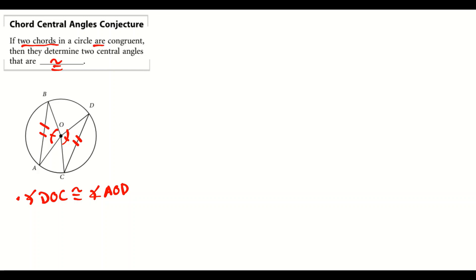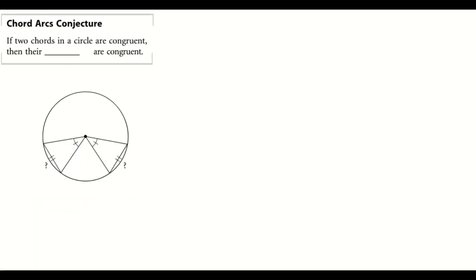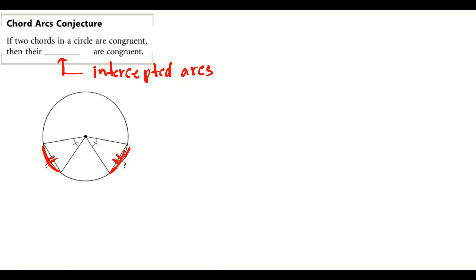Next we have the Chord Arcs Conjecture. It says that if two chords in a circle are congruent — as marked here — then their intercepted arcs are also congruent. So if the chords are congruent, those corresponding intercepted arcs are congruent as well.